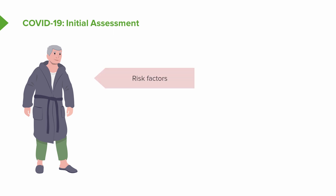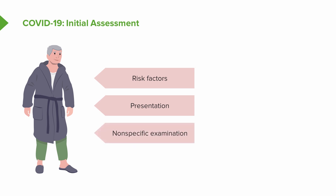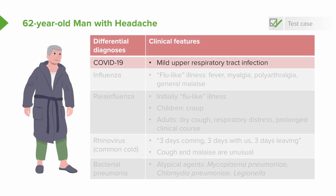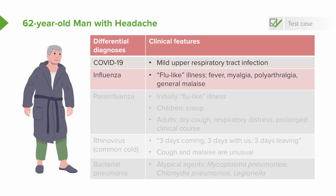In our initial assessment, he does have risk factors suggesting higher risk for developing COVID-19 and for progression to severe disease. However, his presentation is still very non-specific — it could be anything. His physical examination does not lead us in any one specific direction. Our differential diagnosis includes COVID-19 presenting with mild upper respiratory tract infection and potentially progressing but not yet having done so.